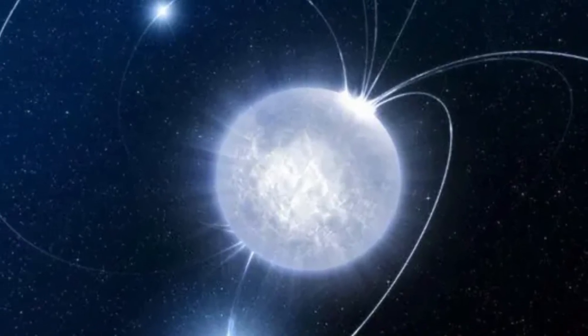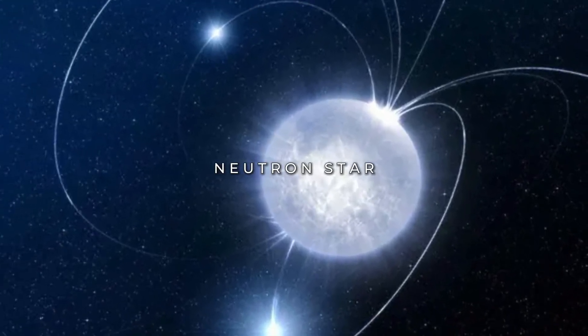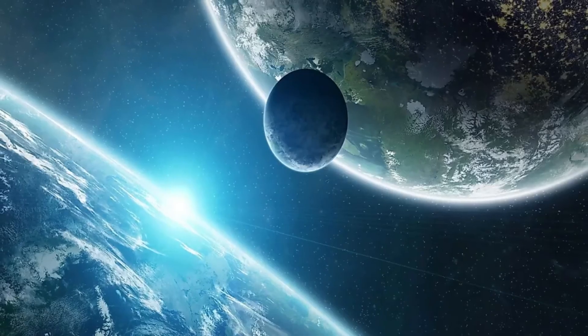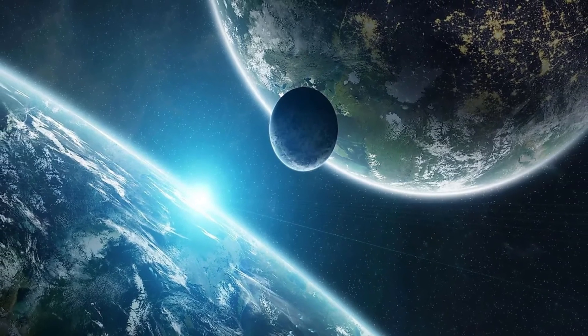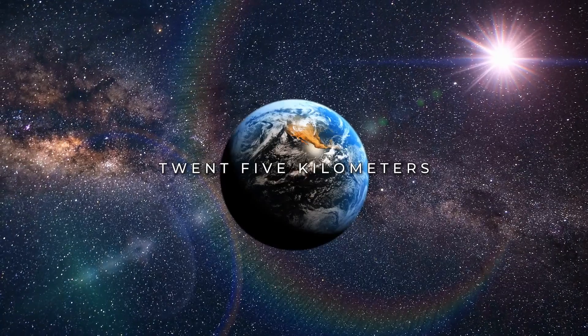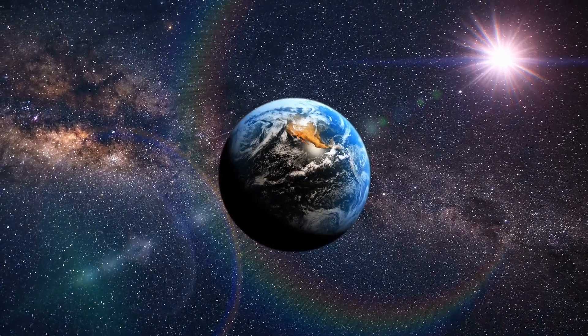What's left after a star dies is what we call a neutron star. Picture this: it's got the mass of about a million Earths, but is squeezed into a space just 25 kilometers wide. That's incredibly dense.